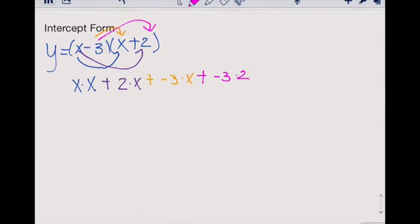Now we move on to the next step of simplifying. x times x will give us x squared. 2 times x will give us 2x, plus a negative 3x will give us minus 3x. And plus a negative 3 times 2 will give us a negative 6.